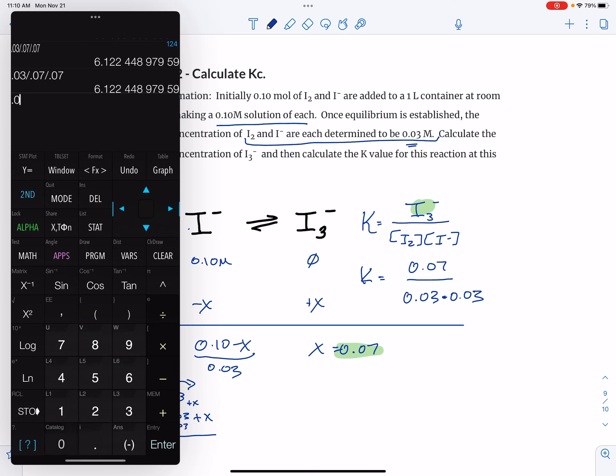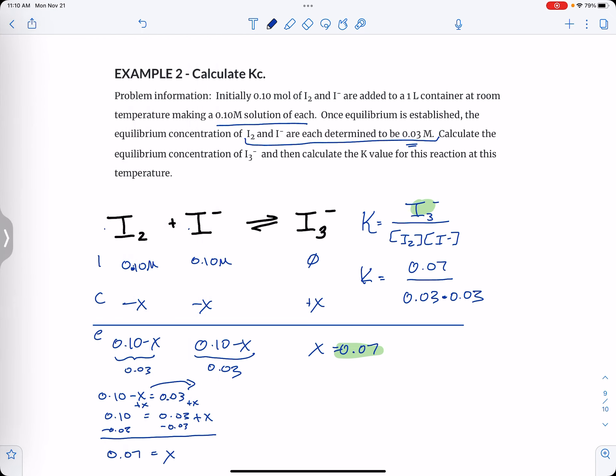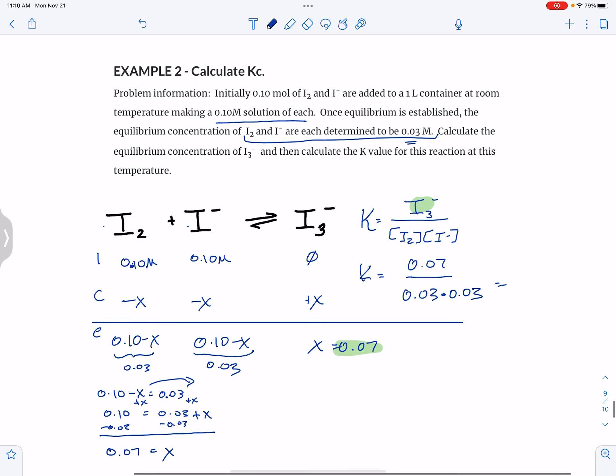0.07 divided by 0.03 divided by 0.03. So that gives me 77 and now it's actually 78. And you might be thinking, wait a second, here we only have one sig fig, okay?